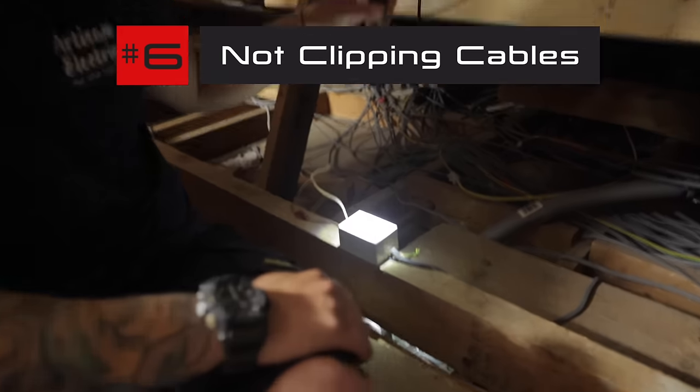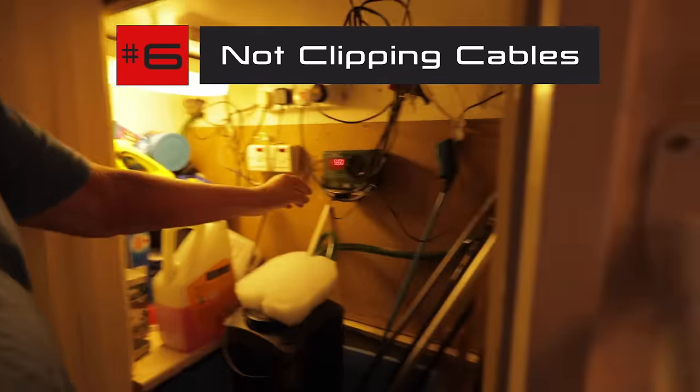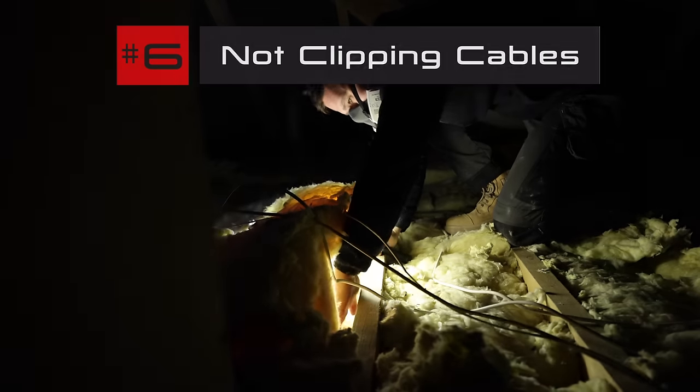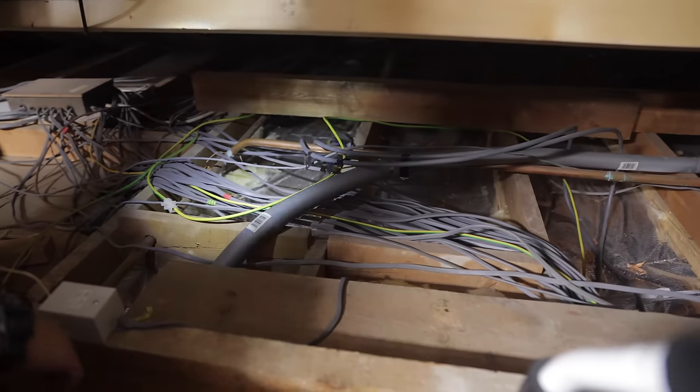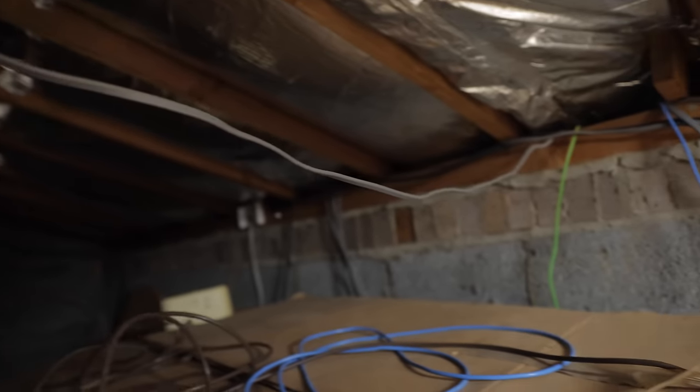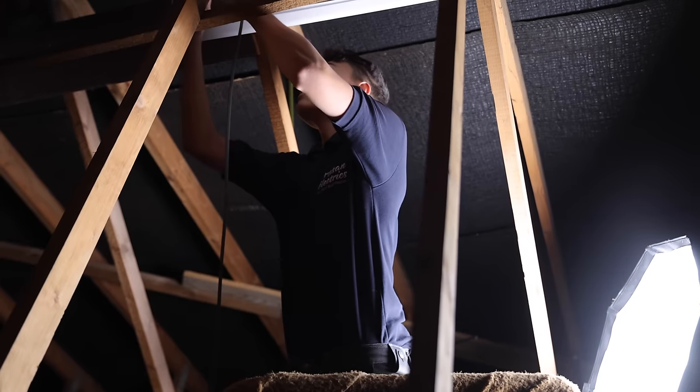Another one we see a lot is people installing cables but not clipping them up properly. It's not difficult to clip a cable or put in trunking but people seem to love just stringing cables along through lofts or on the outside of houses and it's really not safe because somebody could trip or pull it off. It puts strain on the cable. Cables should be adequately secured so if you're installing cables make sure you clip them up.